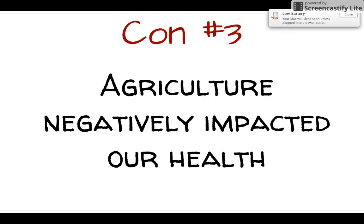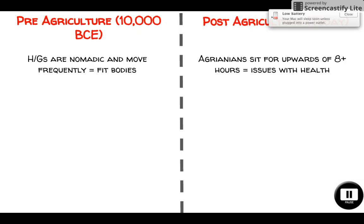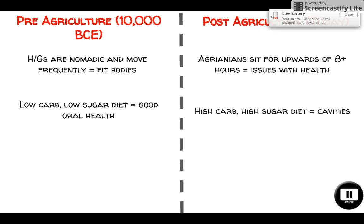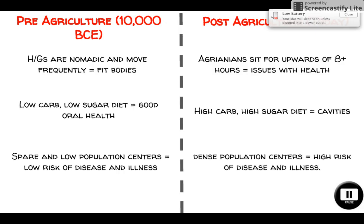Finally, agriculture negatively impacted our health. Hunter-gatherers were constantly on the move — their bodies were fit. By contrast, people today can sit for upwards of eight hours and suffer severe health issues like obesity, high blood pressure, and blood clots. Hunter-gatherers also had a better diet — low carbs and low sugar — so their teeth were better than ours. We have to brush our teeth constantly because of our high-carbohydrate, high-sugar diet. Additionally, in low-population settings, sicknesses and diseases do not spread as quickly as in densely populated centers.